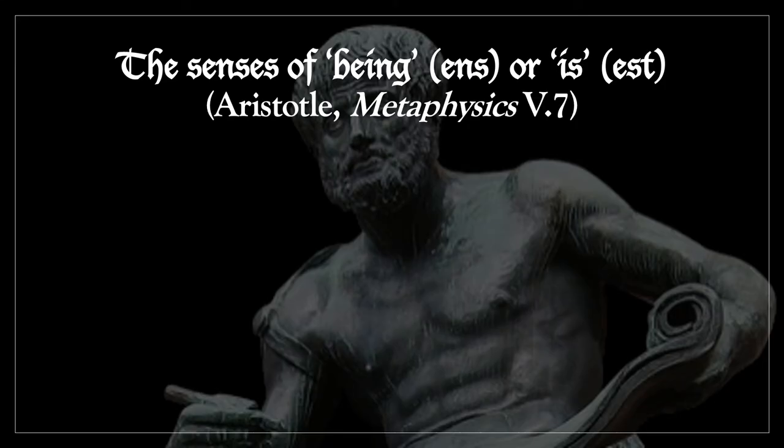In chapter 1, St. Thomas alludes to something that Aristotle says in book 5 of his Metaphysics. Aristotle says that there are several senses of the word being, 'ens', or 'is' — which in Latin is 'est'. The word 'is' just means 'is a being', and so the senses of 'is' are also the senses of being.